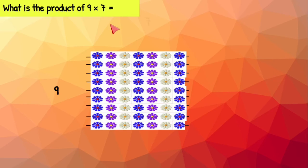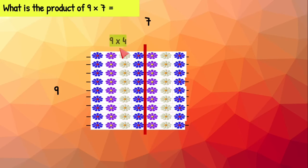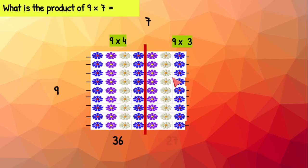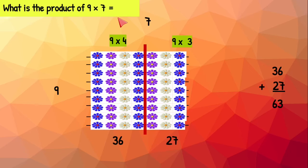Nine times seven means nine rows of seven. Let's go ahead and cut our array. On this side we have nine rows of four, which equals 36. On this array we have nine rows with three flowers on each one. Nine times three equals 27. We're going to put both arrays together by adding 36 plus 27. We know when we put that together we get 63. Nine times seven is 63.